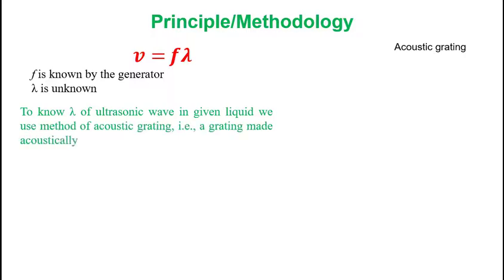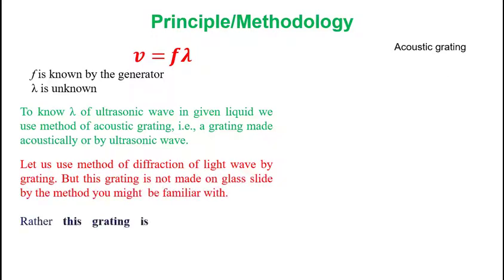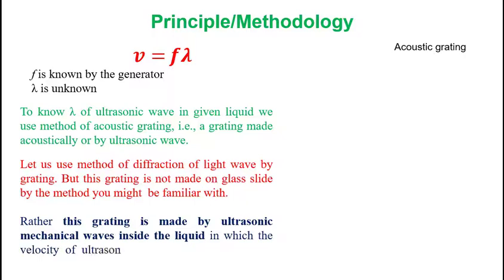By term acoustic grating, one means a grating made acoustically or by ultrasonic wave. We use method of diffraction of light wave by grating. But this grating is not made on glass light by the method you might be familiar with. Rather, this grating is made by ultrasonic mechanical waves inside the liquid in which the velocity of ultrasonic wave is to be determined. This is known as acoustic grating.